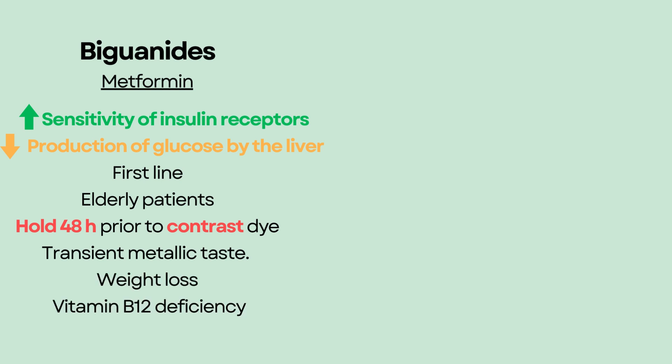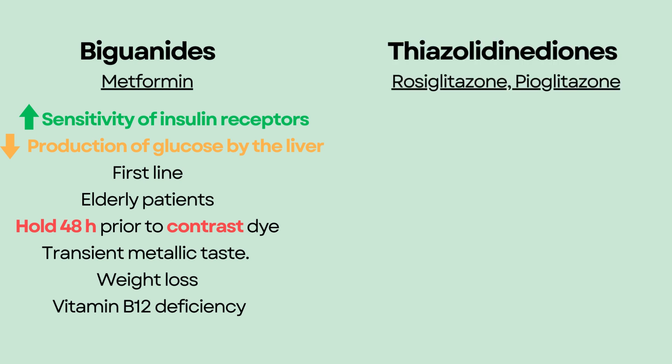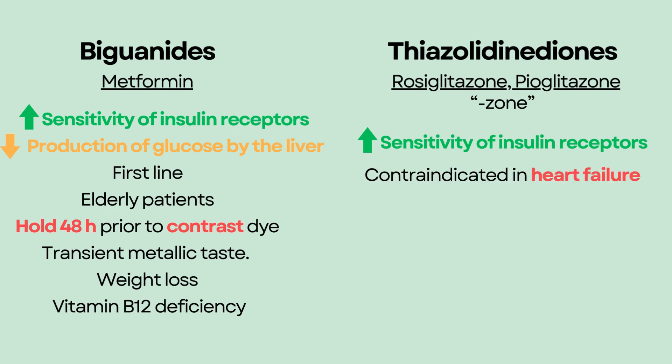The next category is thiazolidinediones. Examples include rosiglitazone and pioglitazone — note that they both end with the suffix '-zone.' Thiazolidinediones increase sensitivity of insulin receptors. They can cause fluid retention by the kidneys and are therefore contraindicated in patients with heart failure.